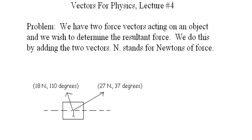We've got this box here with the center of gravity and a horizontal line. This is one vector with 27 newtons of force representing a length of 27 newtons in the direction of 37 degrees counterclockwise from this horizontal dotted line.